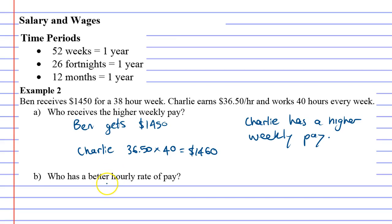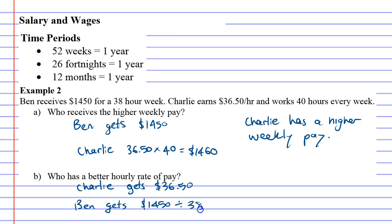Question B says: who has a better hourly rate of pay? We know that Charlie gets $36.50 per hour, so we know Charlie's hourly rate of pay, but we don't know Ben's. So what we're going to do is — Ben gets $1,450 per week, and because he works 38 hours in a week, we're going to divide by 38. 1,450 divided by 38 equals — I'm getting $38.16. So even though Charlie gets more in a week, Ben has a better hourly rate of pay.